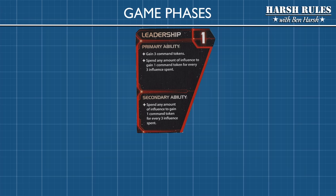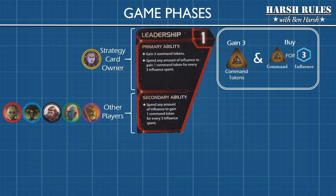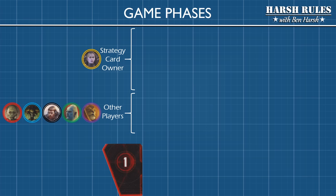Strategy card number one is Leadership. Strategy cards are divided into two halves. The upper half's primary ability can be activated by the owner. The lower half's secondary ability can be activated by any player that spends a command token. On this first strategy card, Leadership, the owner can gain three command tokens and they can buy a command token for every three influence they spend. Other players can spend a command token to gain the ability to buy more command tokens for three influence each.